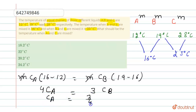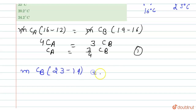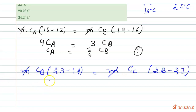This is the first equation: Ca = (3/4)·Cb. Now we write the equation for the second case — B and C. m is the mass, Cb is the specific heat, and the temperature difference is 23 minus 19. m is the mass, Cc is the specific heat, and the difference is 28 minus 23.